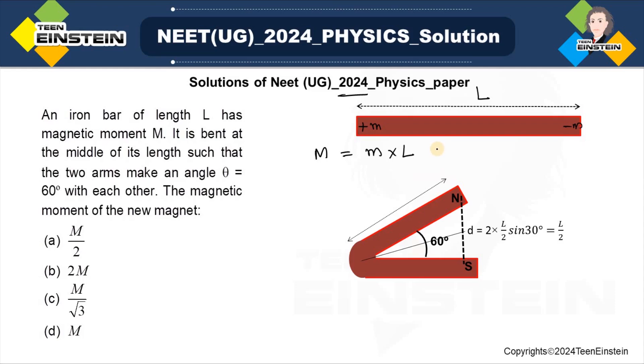Just like electric dipole we write the magnitude of the charge and the distance between the two charges, so that is 2D etc., we write in case of electric dipole. Okay, now the same bar is bent at the middle such that the two arms make an angle theta equals 60 degrees between them.